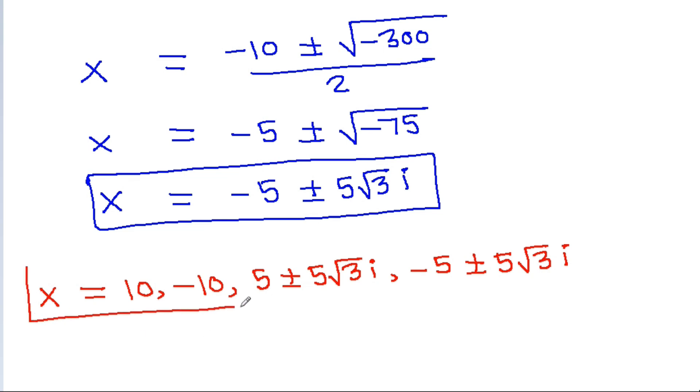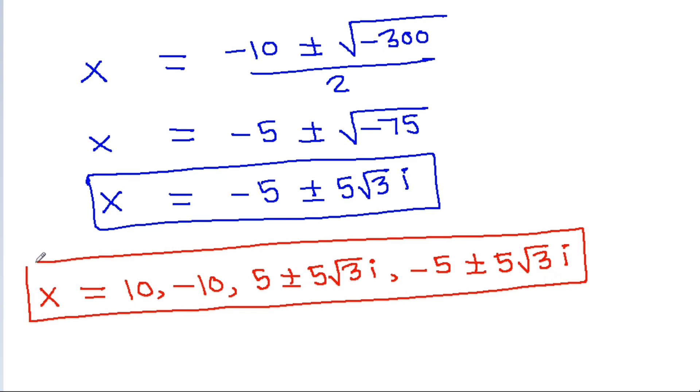These are the 6 complex values of x: 10, minus 10, 5 plus 5√3·i, 5 minus 5√3·i, minus 5 plus 5√3·i, and minus 5 minus 5√3·i.